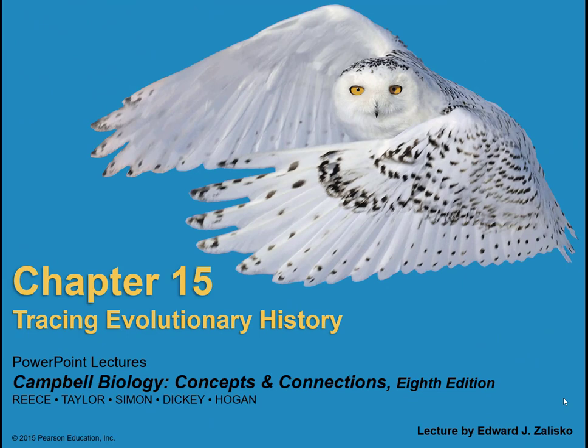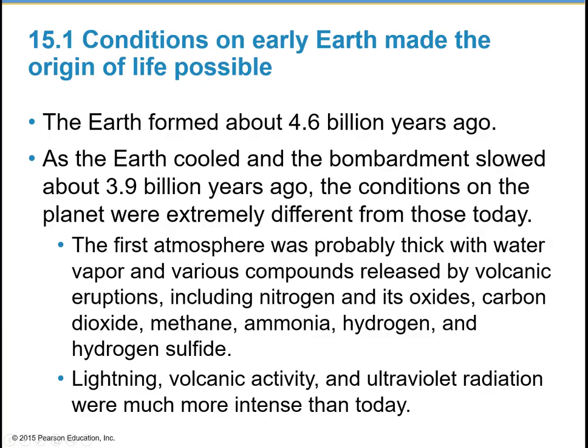Chapter 15: Tracing Evolutionary History. We're going to go over a brief overview of the theory for the early Earth and the origin of life. The Earth formed about 4.6 billion years ago, and as it began to cool and the bombardment slowed about 3.9 billion years ago, conditions were very different. The atmosphere was probably thick with water vapor and compounds released by volcanic eruptions, including nitrogen and its oxides, carbon dioxide, methane, ammonia, hydrogen, and hydrogen sulfide.